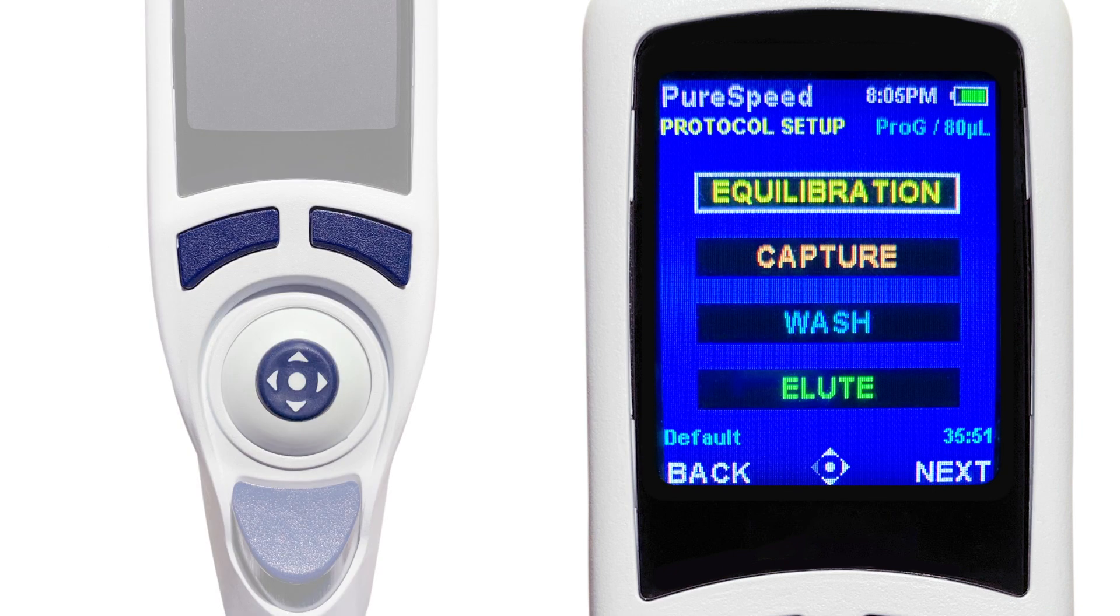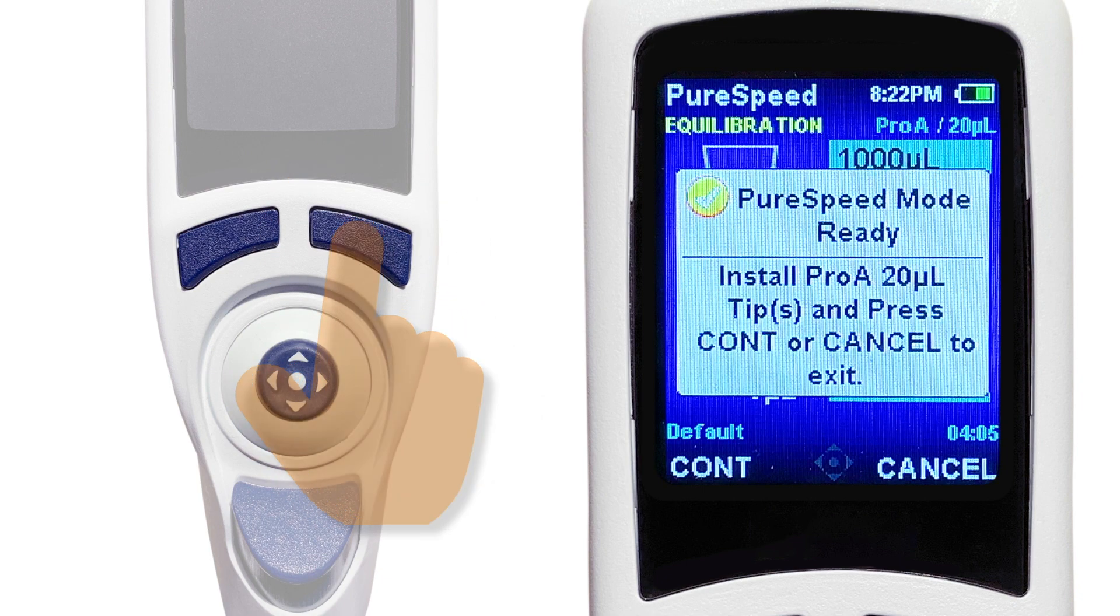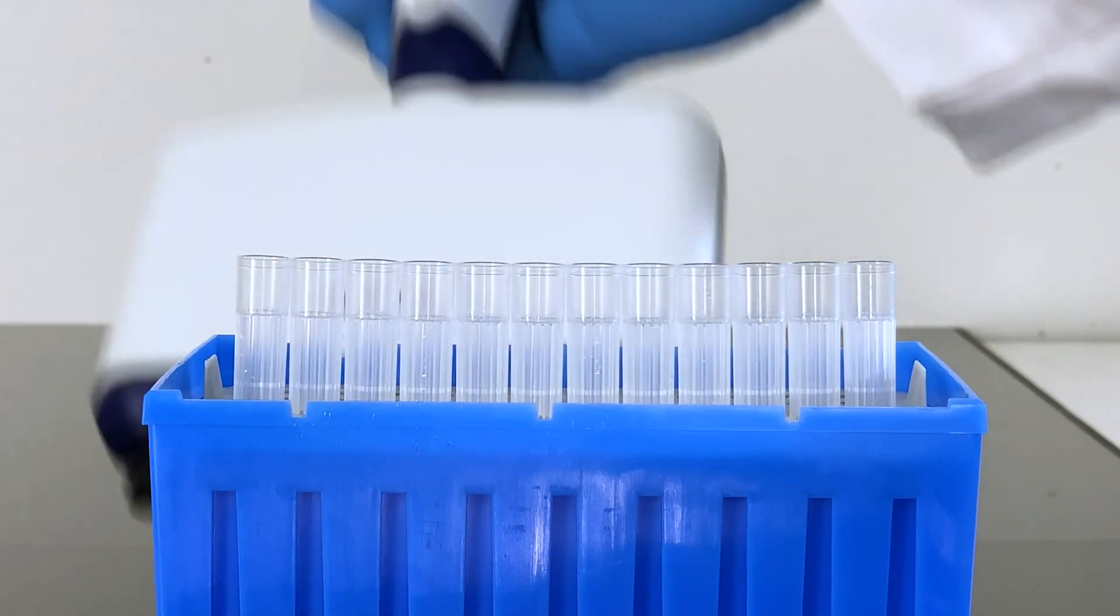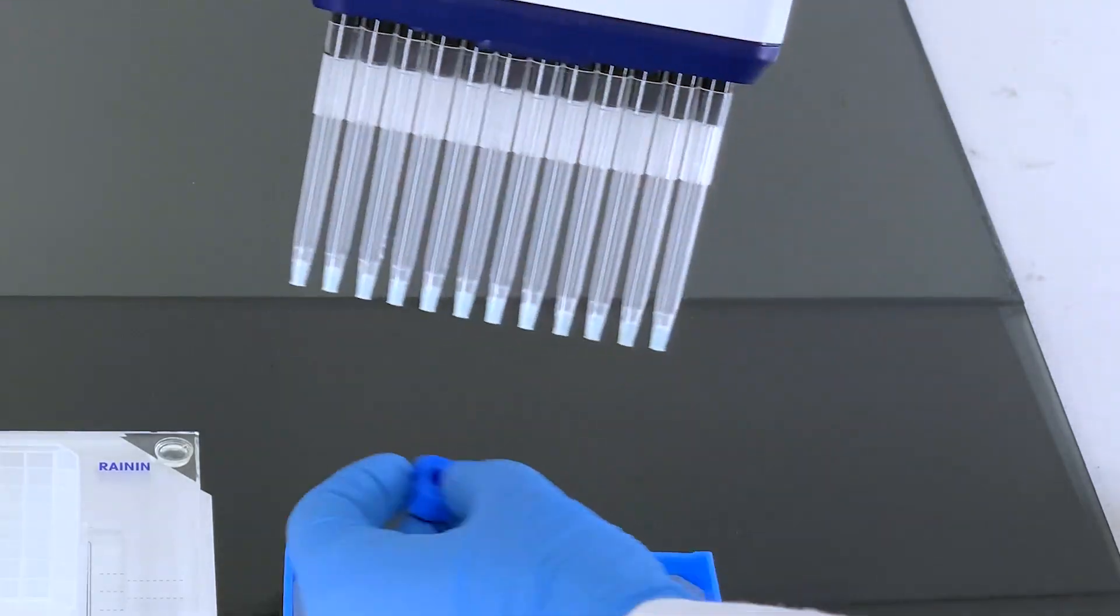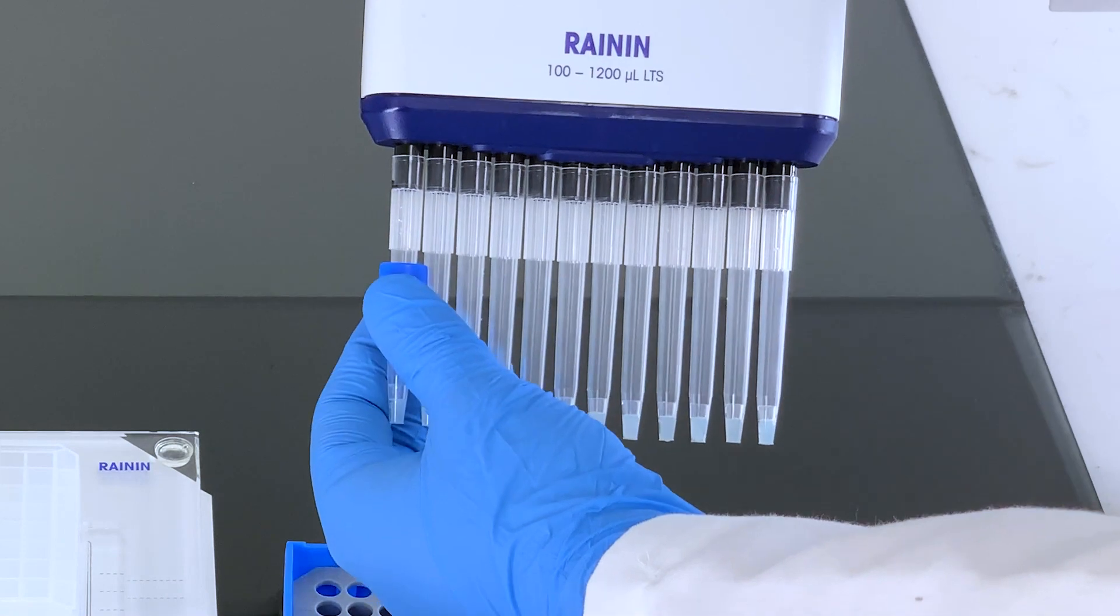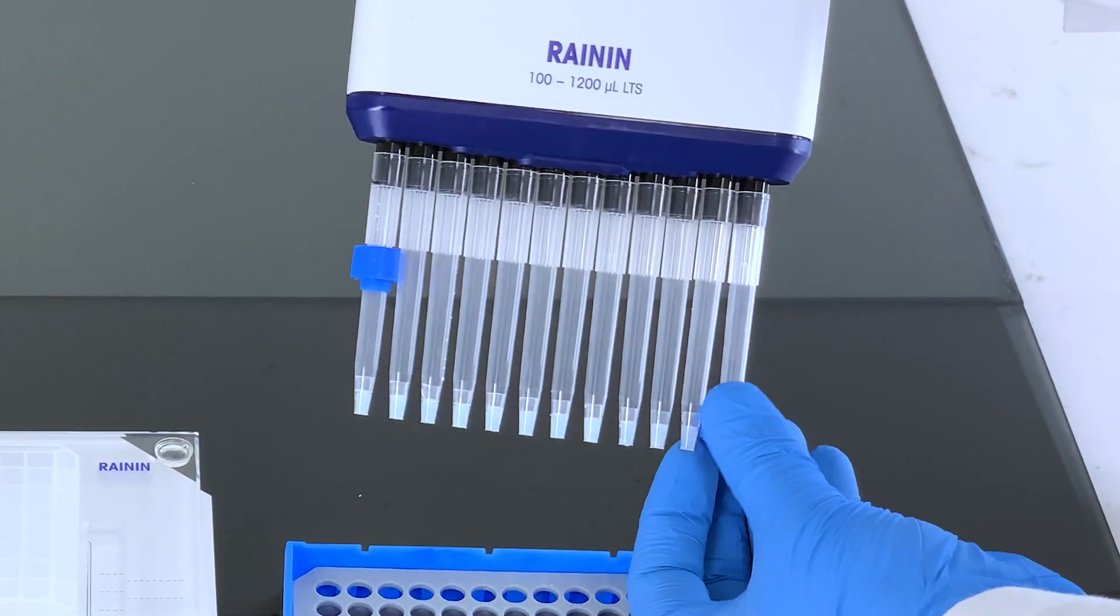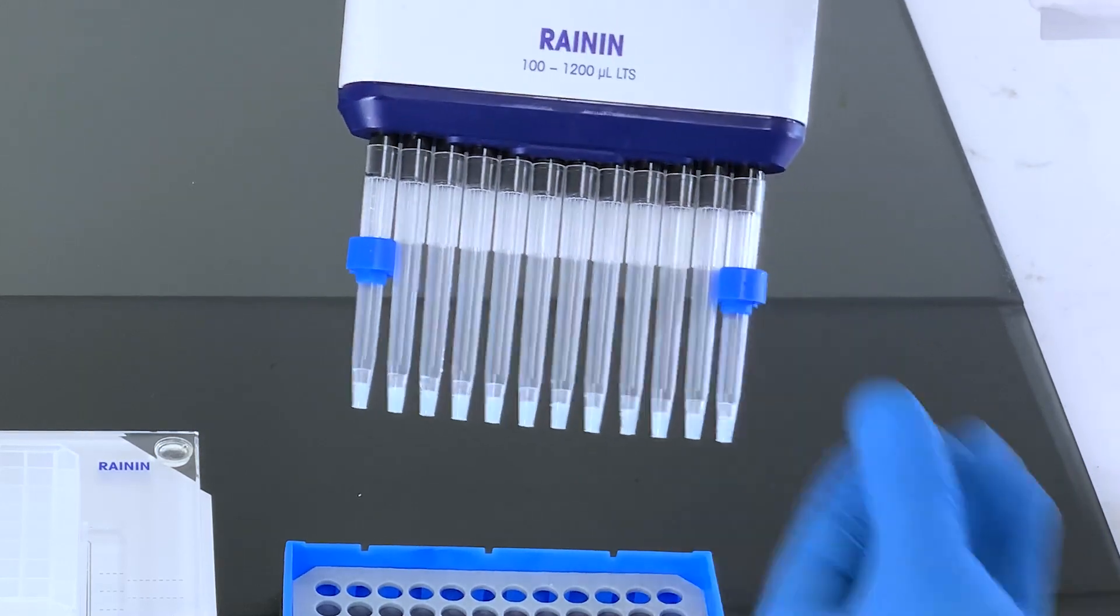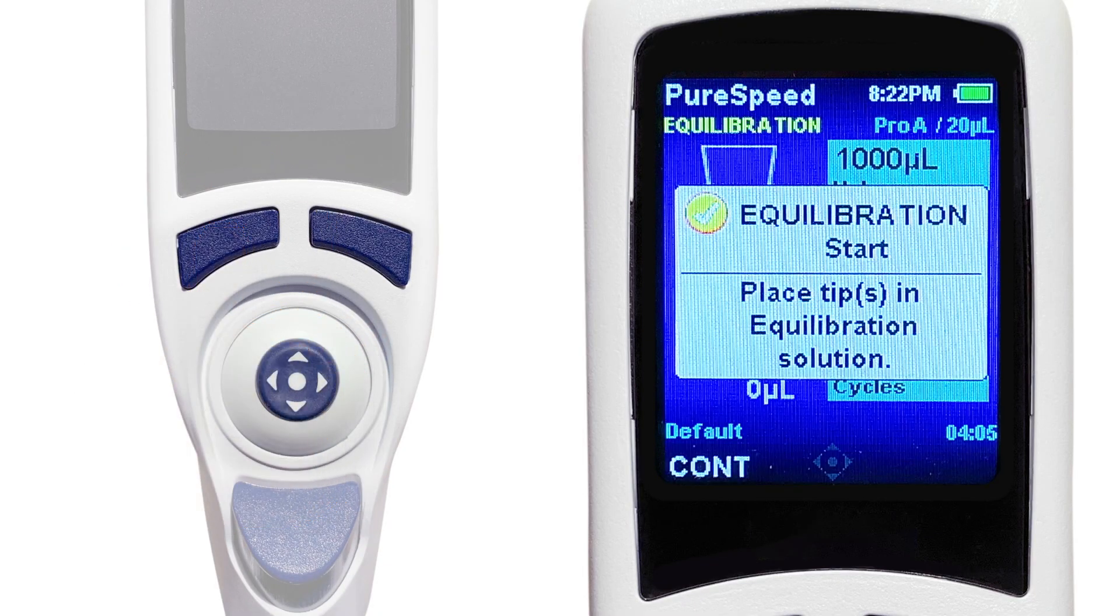Press the right button under the screen to select Equilibration. Press Run to start your method run. The pipette will give you directions to install the proper tips. Place your pipette on top of the Phi-Tip columns and press down to make sure they are fully secured. Then push the appropriate adapters fully into first tip on each end. Use blue adapters for 1000 µL columns and green adapters for 200 µL columns. Then press the left button under the screen to select Continue.